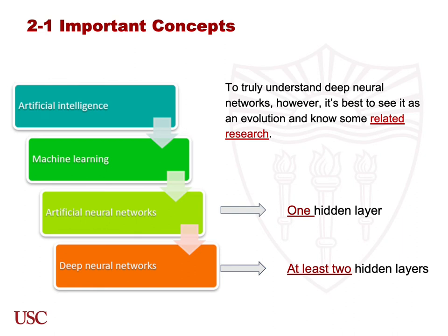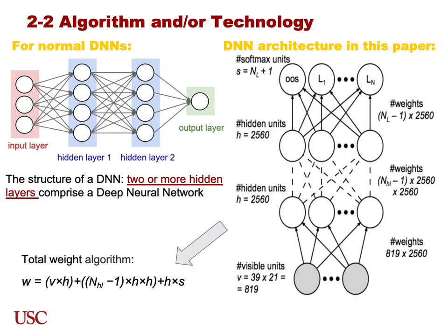This is why DNNs are able to handle more complex data structures and process large amounts of data. In this paper, the authors used this to develop a DNN architecture. They use a specific feature as an input layer, and after several hidden layers they set an output layer which consists of many languages. Therefore, we can figure out the total weight in this topology using the given algorithm.